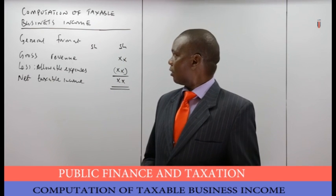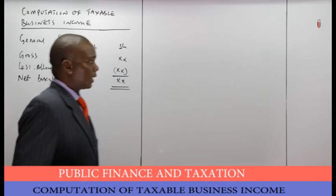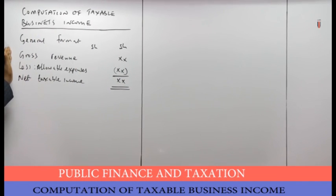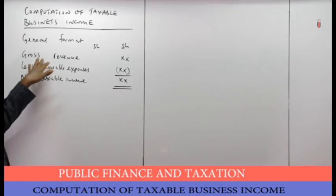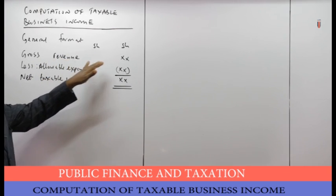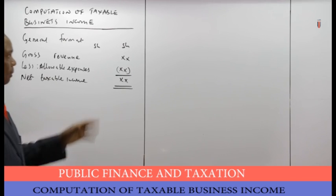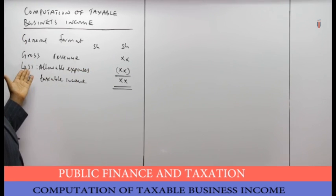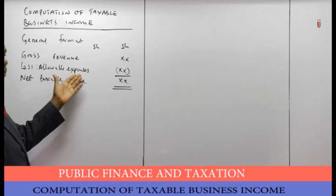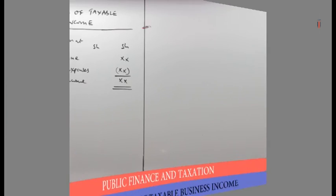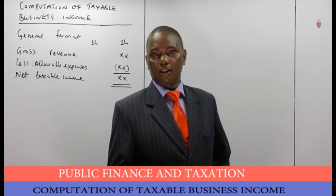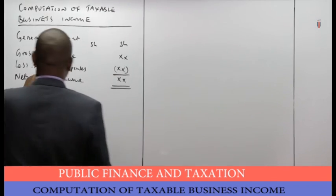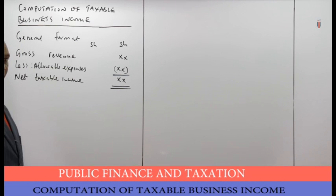The general format for computing taxable business income starts with gross revenue from business operations, from which we deduct allowable expenses to arrive at the net taxable income — the net income for tax purposes.